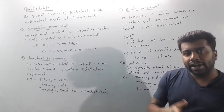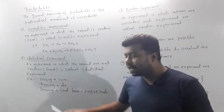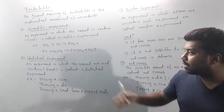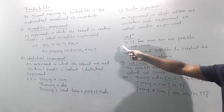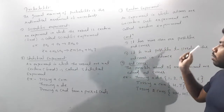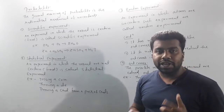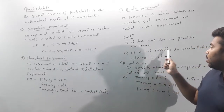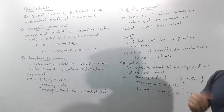For example, tossing a coin — the outcome is either head or tail. Throwing a die — the outcome is one of 1, 2, 3, 4, 5, or 6. In a random experiment, there is more than one outcome, and the outcome is not fixed in advance.